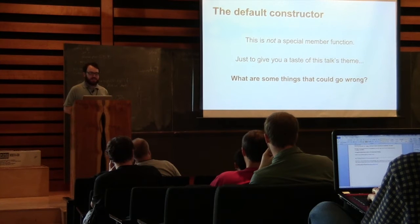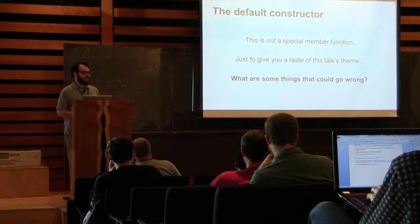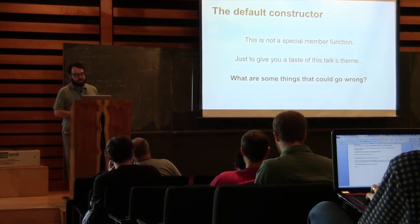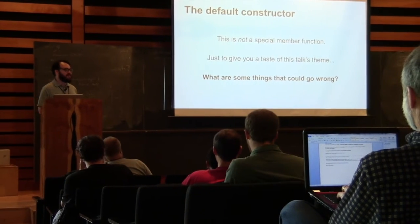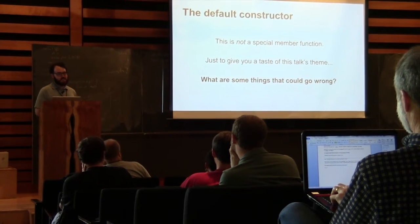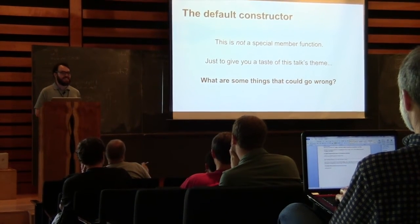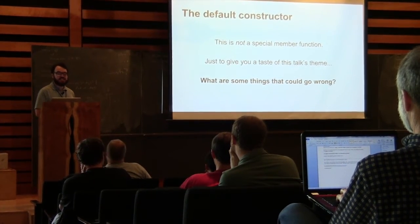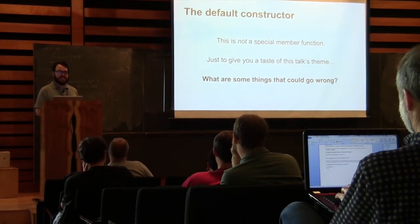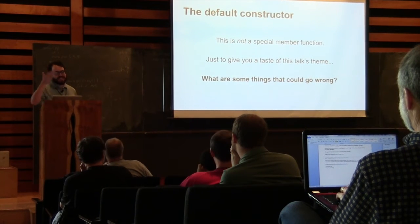Let's talk about the first non-special member function: the default constructor. Usually it just gets defaulted for you. But to give you a taste of the stupid trivia we're going to cover, what are some things that can go wrong with providing a default constructor? One answer: failing to initialize some data member. That would just be a bug — something you'd realize if you looked at the code.